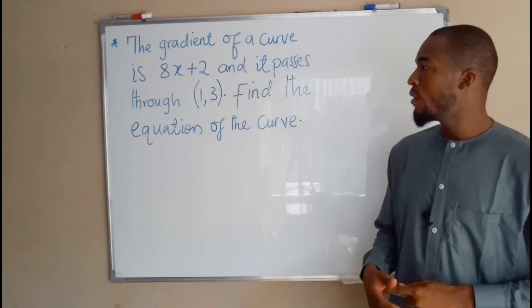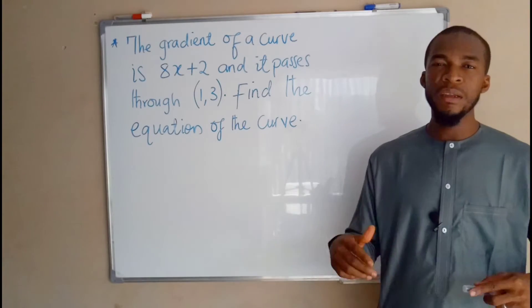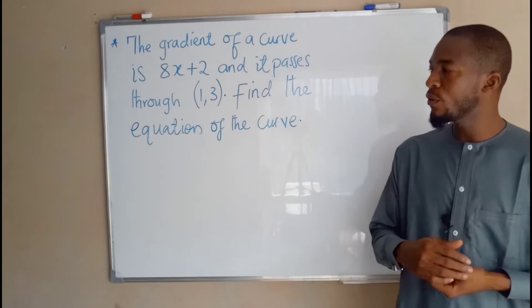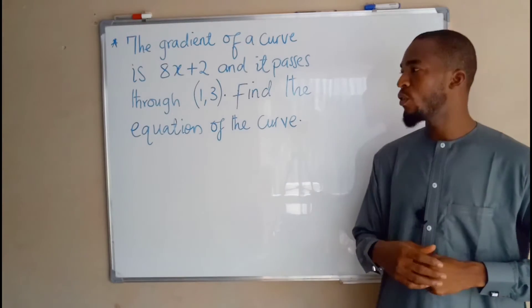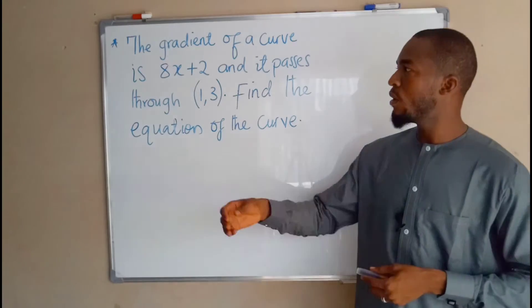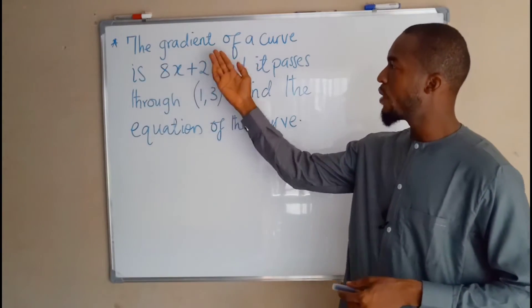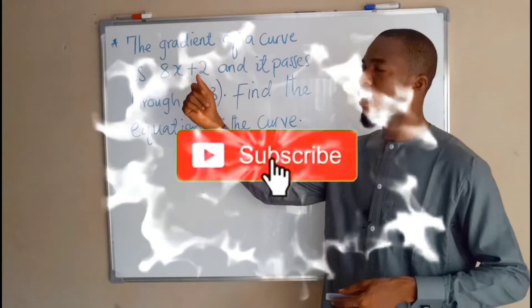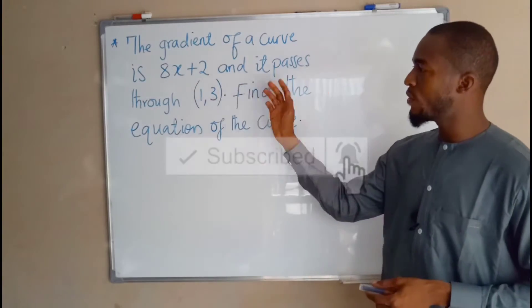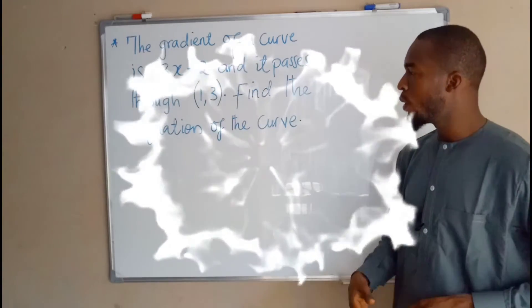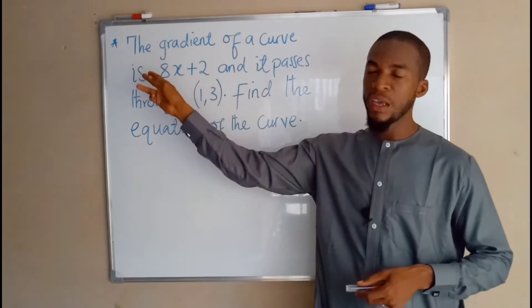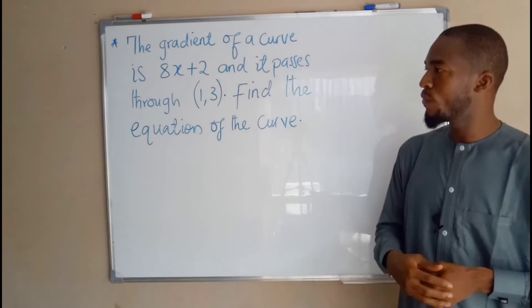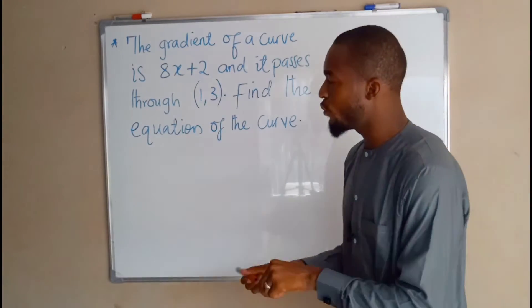Good morning. Here is another question which is directly related to integral calculus, which I sorted out from the past WAEC question paper. It says the gradient of a curve is 8x plus 2 and it passes through this point. Find the equation of the curve. The gradient here means the slope of that curve, which is 8x plus 2.